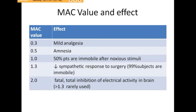If MAC value is 0.3, mild analgesia is provided. If 0.5, amnesia occurs. MAC of 1 means 50% of patients are immobile after noxious stimuli. MAC 1.3 means it will reduce the sympathetic response to surgery and 99% of subjects are immobile. MAC value of 2 is fatal — total inhibition of electrical activity in the brain. Therefore, MAC values greater than 1.3 are rarely used in surgeries.